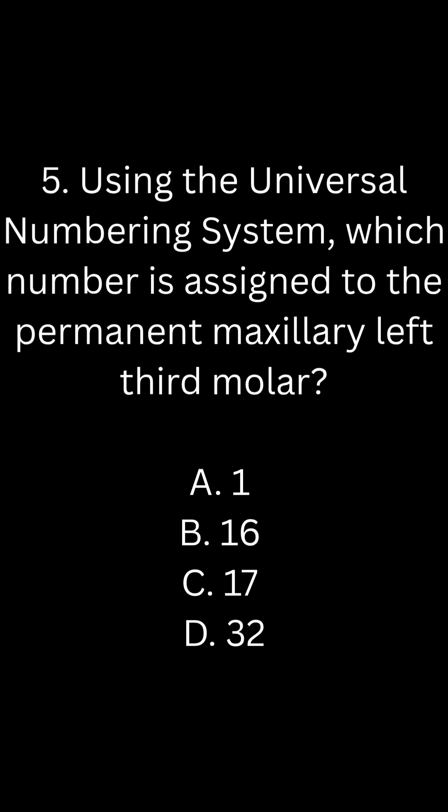Question 5: Using the universal numbering system, which number is assigned to the permanent maxillary left third molar? A. 1. B. 16. C. 17. D. 32.